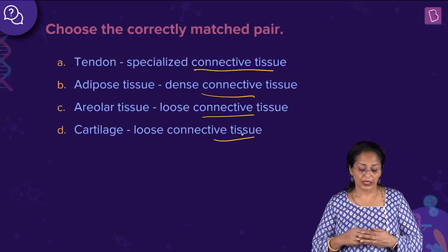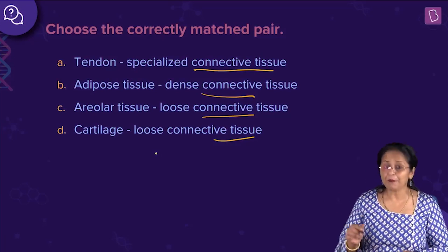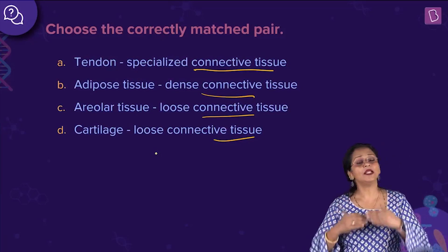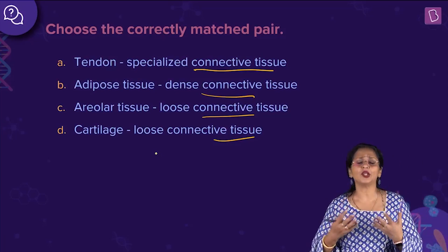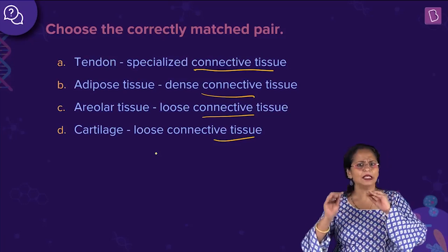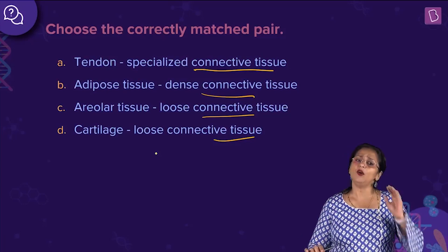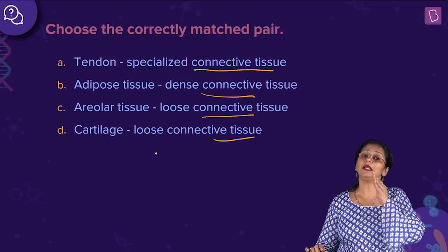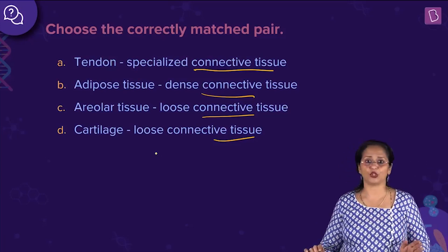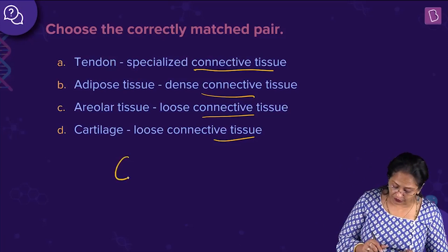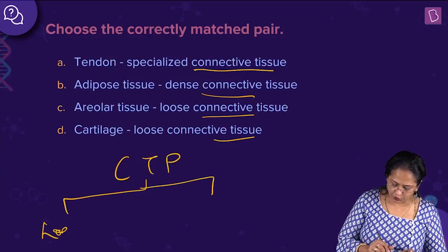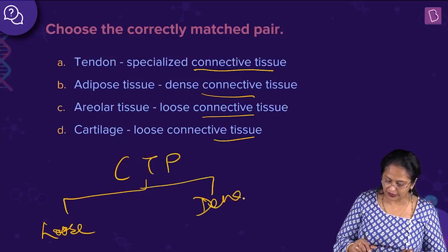Connective tissue is made up of an extracellular matrix containing different types of cells — the main cells being chondrocytes — and also fibers. Connective tissue can be classified as connective tissue proper and special connective tissue. Connective tissue proper can be loose connective tissue or dense connective tissue.